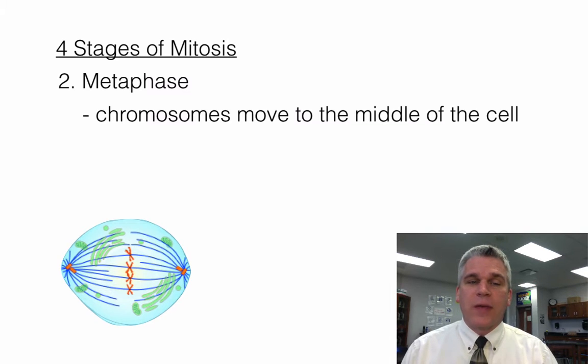So in this case, we have four chromosomes shown in the cell. Four of them are going to move to one side. Four are going to move to the other. So remember, that X-shaped structure is really a combination of two identical chromosomes.